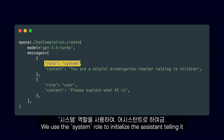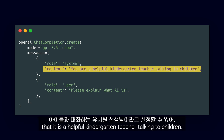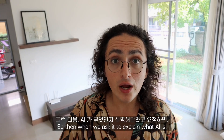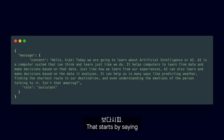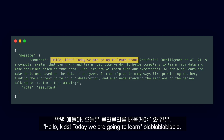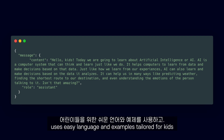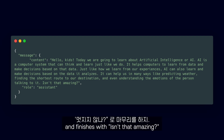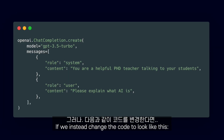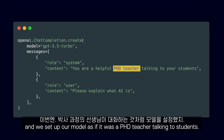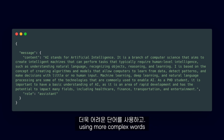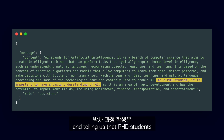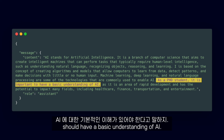We use the system role to initialize the assistant, telling it that it is a helpful kindergarten teacher talking to children. So when we ask it to explain what AI is, we get a response that starts by saying "Hello kids, today we're going to learn..." — it uses easy language and examples tailored for kids and finishes with "Isn't that amazing?" If we instead change the code and set up our model as if it was a PhD teacher talking to students, the response will be more complex, using more complex words and telling us that PhD students should have a basic understanding of AI.